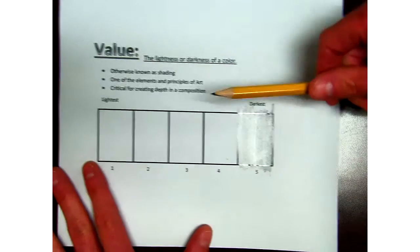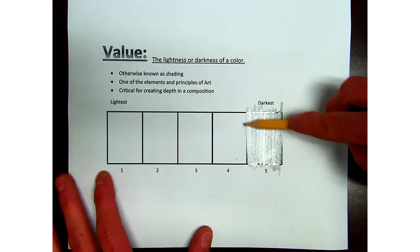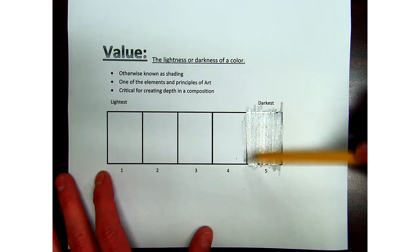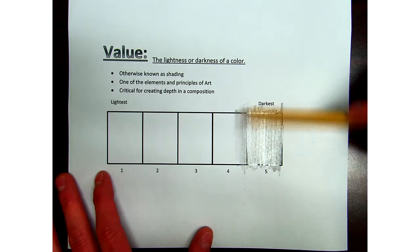Now, as I go down, I'm going to make it a little lighter every time that I go down. Also, with that, I'm going to go further back on my pencil so I'm not pushing quite so hard. So you're going to go from the darkest to lightest or lightest to darkest. Just make sure you don't put anything in that first box.